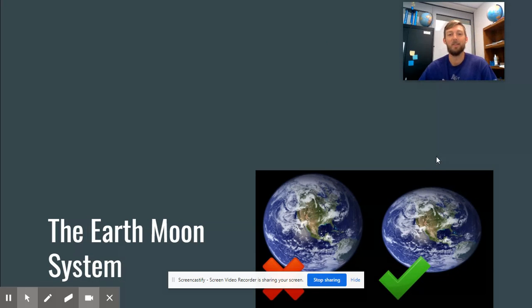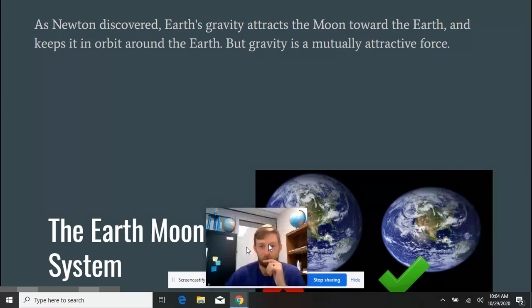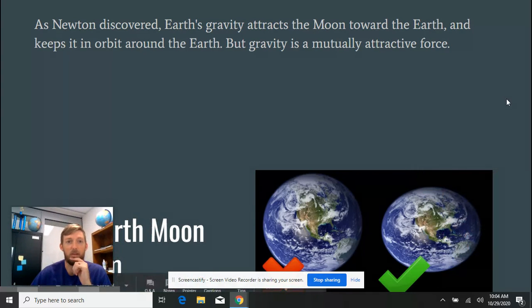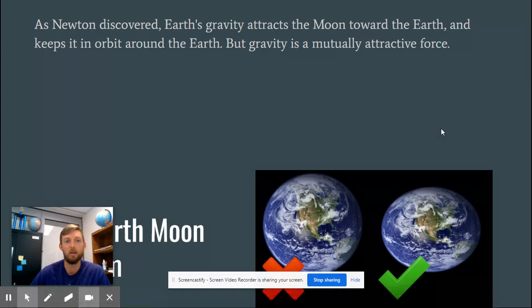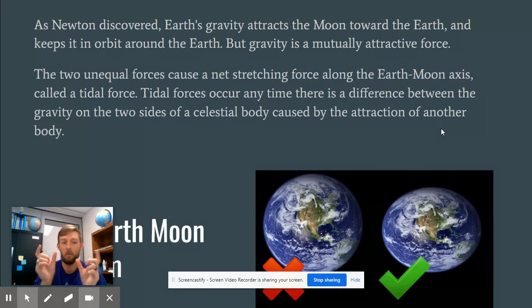Let's talk the moon system. As Newton discovered, Earth's gravity attracts the moon, but the moon also attracts part of the Earth. So they have both entities are attracting each other. Now, these are not equal forces. The Earth is definitely heavier, so it has more of a pull. But any time that you have two forces acting on each other, that is called a tidal force.